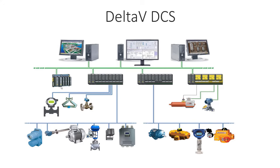Inside that control cabinet you would have two controllers — a main and a redundant one. Each area has its own unique controllers, and each area's control cabinet includes IO cards, power supply, and other cards as well as controllers. The benefit of having separate control cabinets in different areas is that if one controller or cabinet fails, only that one area is affected — the rest of the plant stays up and running.